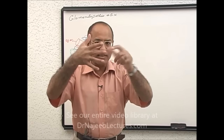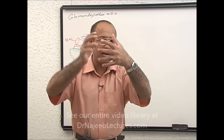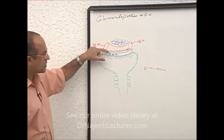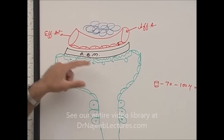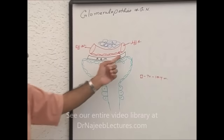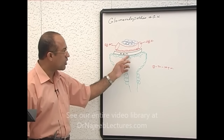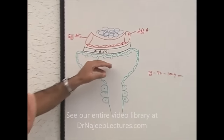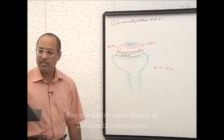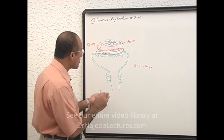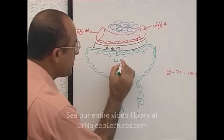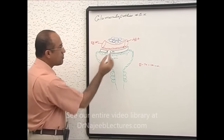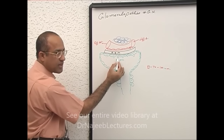Substances are allowed to pass through fenestrations and eventually through filtration slits. Until podocytes are properly applied on the basement membrane there will be normal filtration, but if podocytes or their foot processes detach, the membrane becomes more permeable. The size of the filtration slit is about 20 to 30 nanometers, while on the endothelial cell side it was 70 to 100 nanometers.